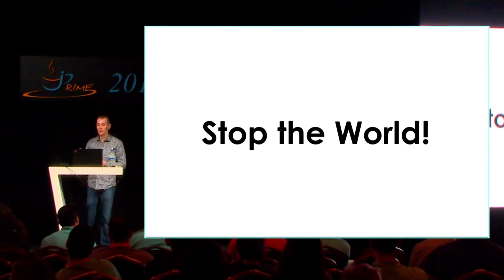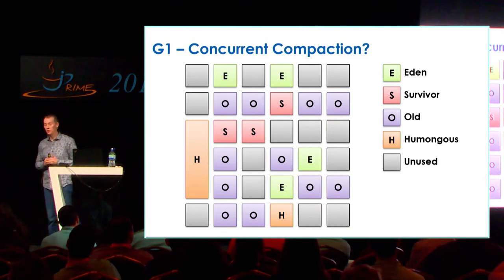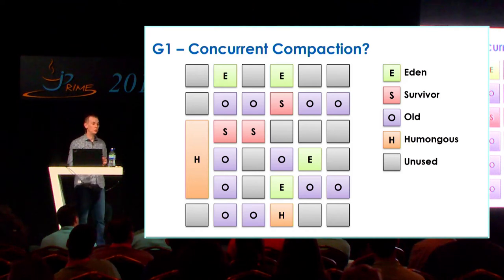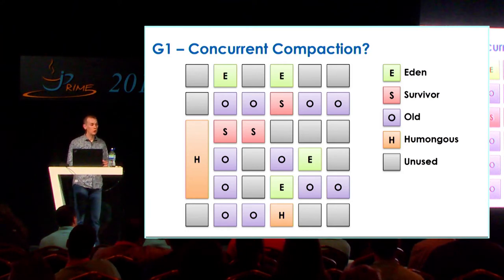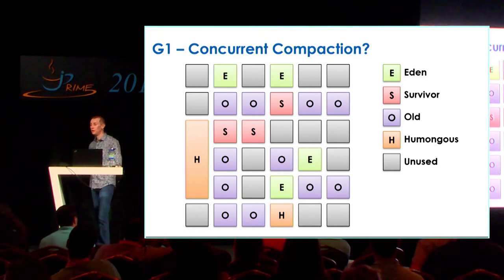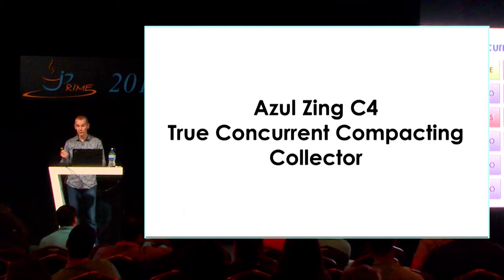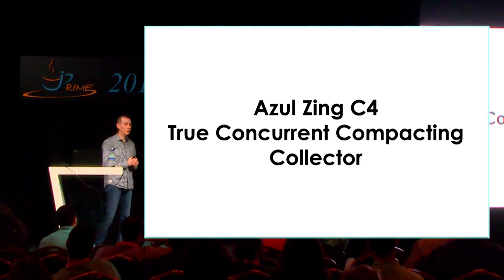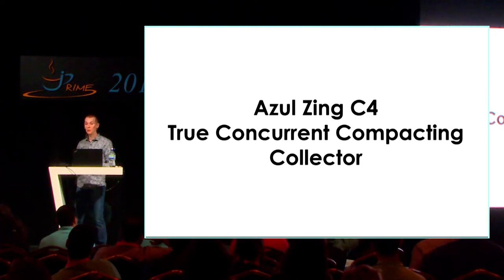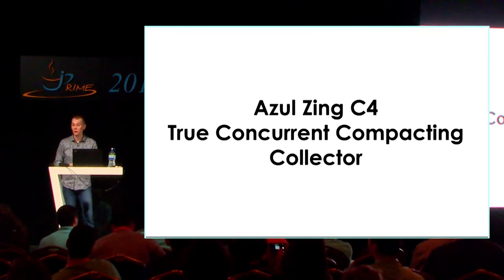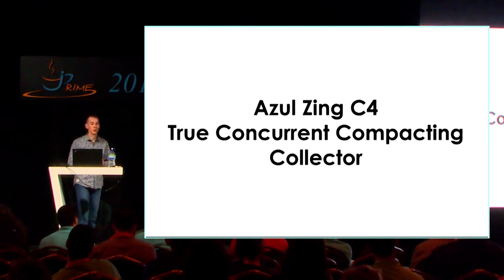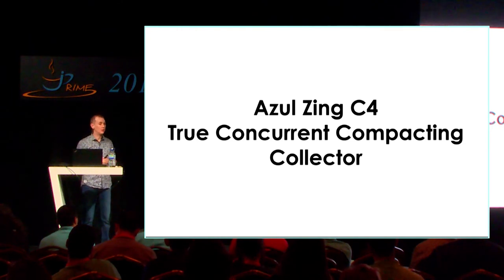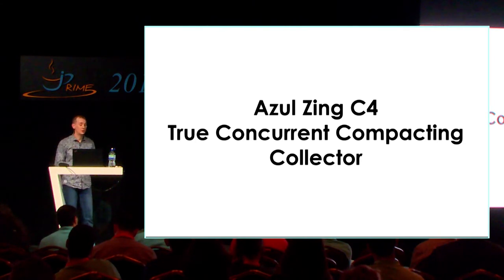To address stop-the-world pauses, G1 splits up the heap into many different regions. It looks at which regions have the most garbage and least retained objects, copies those with a smaller chunk, so the pause doesn't have to be as long. It's still pausing, but for less time. There are better options — things like the Azul C4 collector, which is concurrently compacting and can do this on both young and old generation completely concurrently with your code. So if you want no pauses, we have collectors that can do this.